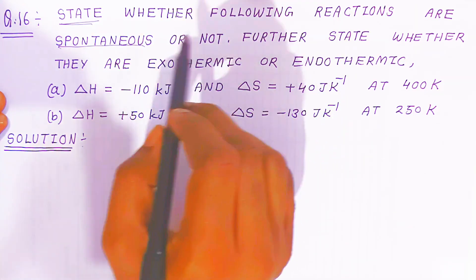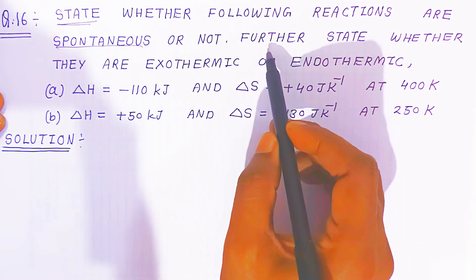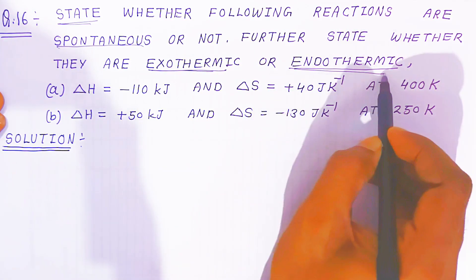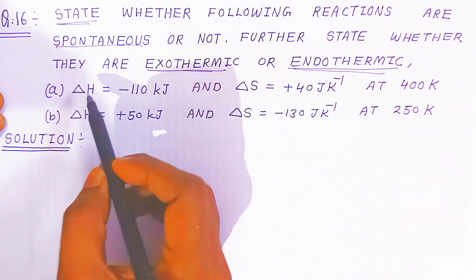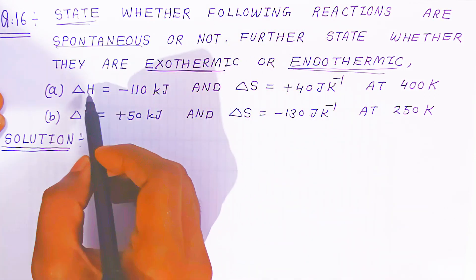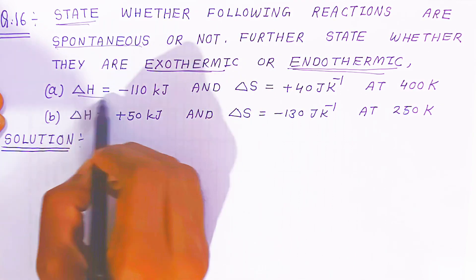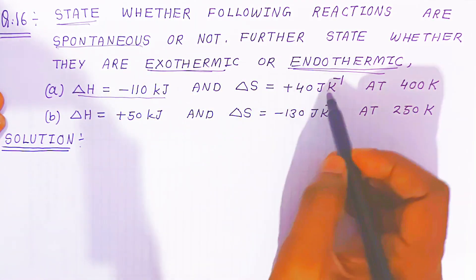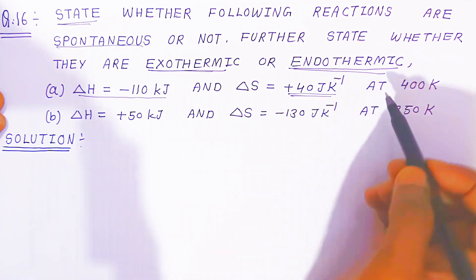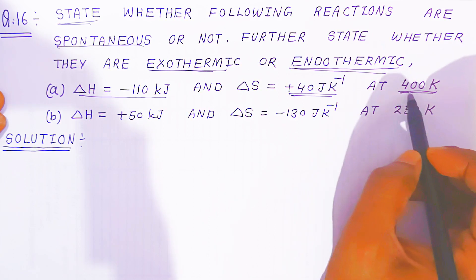If it is not spontaneous, that reaction we call as non-spontaneous reaction. Further, they state whether they are exothermic reaction or endothermic reaction. So here, with the help of these given data, any reaction is given — if ΔH is given minus 110 kilojoule and ΔS change in entropy is given plus 40 joule per kelvin, when the temperature is given, this reaction is going on at 400 kelvin.